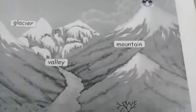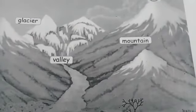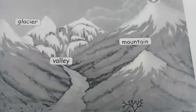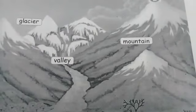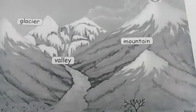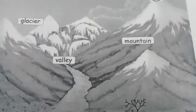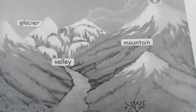Then next one is mountain. A mountain is a large landform that rises above the surrounding land in a limited area, usually in the form of a peak.